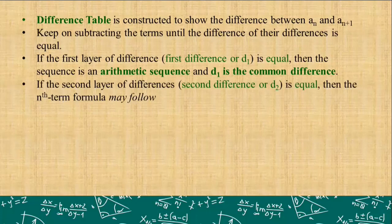If the first layer of difference is not equal, we will continue subtracting. If the second layer of differences, the second difference or d₂, is equal, then we can start building the formula. Sometimes the nth term formula may follow aₙ = An² + C.